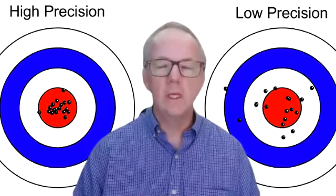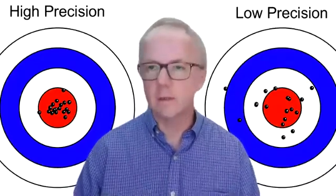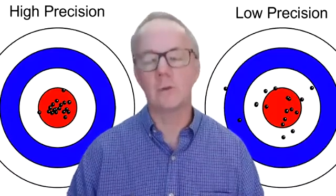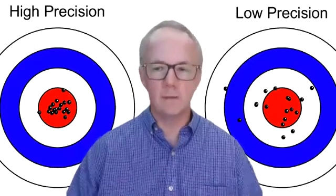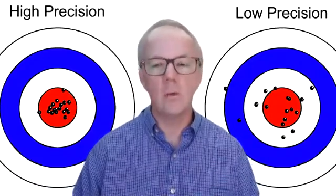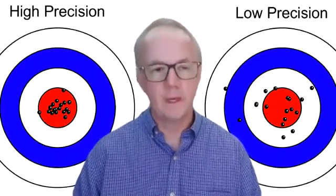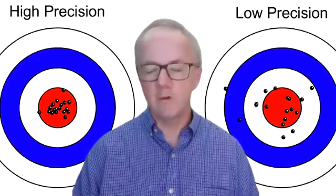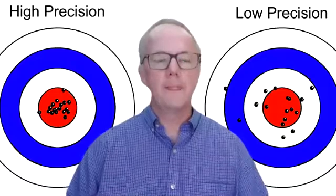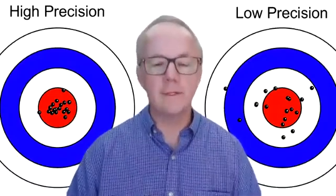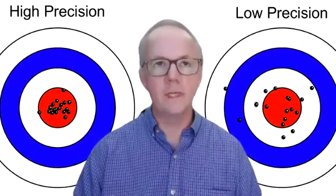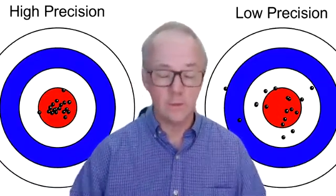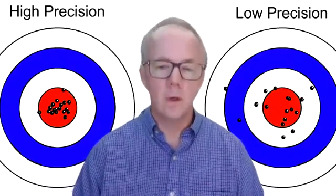Last time we were talking about temperatures and temperature measuring equipment and electronic response. This time we're going to talk about the balance and talk about precision. You can see on the two different targets behind me a different spread of results — maybe they look like ball bearings or shots or bullet holes. The core things to look at in calibration are linearity, precision, and accuracy, and today we're looking at precision.